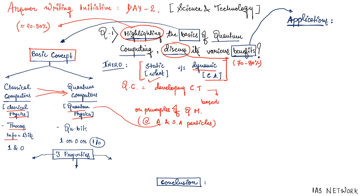In classical computers, the computers we use at home, information is processed in the form of bits. These bits are either 1 or 0. For example, if you type a message 'yes,' it gets converted into electronic voltage signals of 1s and 0s and transferred. But in quantum computers, information is processed in the form of quantum bits, and quantum bits can be in the state of 1 or 0, or simultaneously both 1 and 0 at the same time. This is the key differentiating quality of quantum computing.